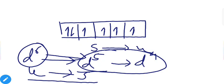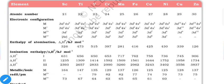In the table of first transition series elements with their ionization enthalpies, you will notice that the change in number of electrons and the arrangement of electrons in orbitals both affect the value of ionization enthalpies.